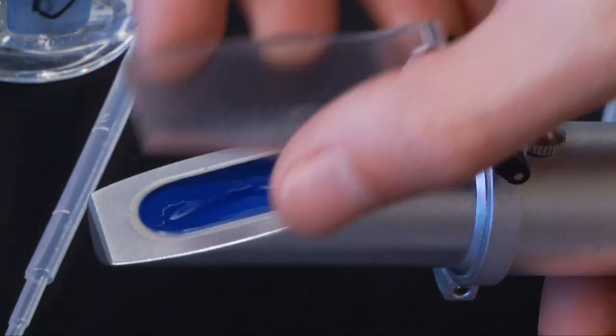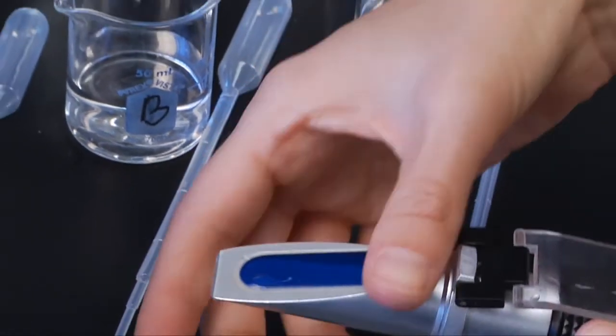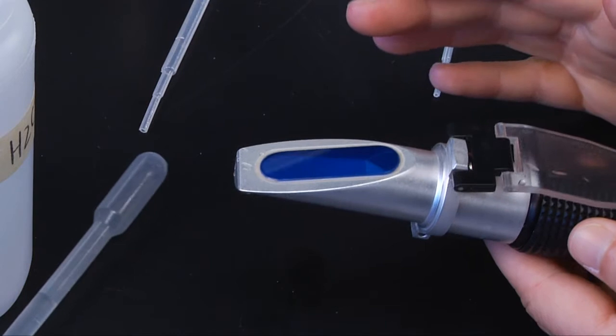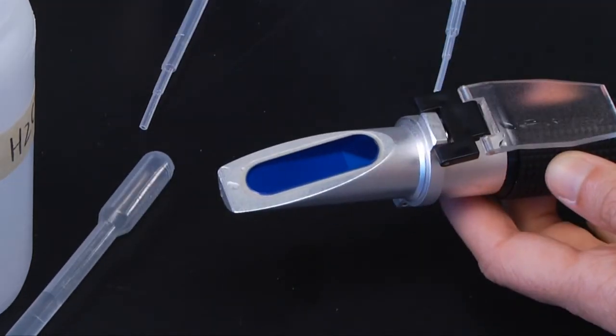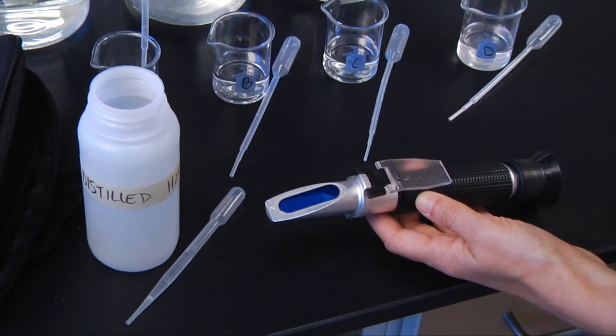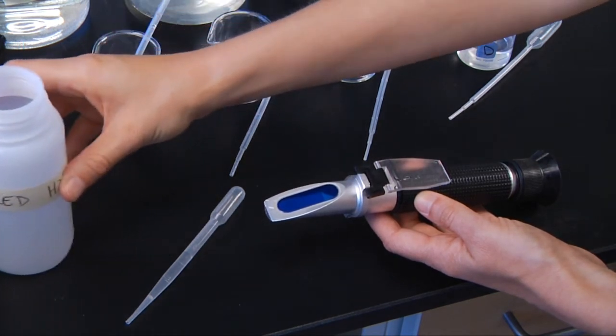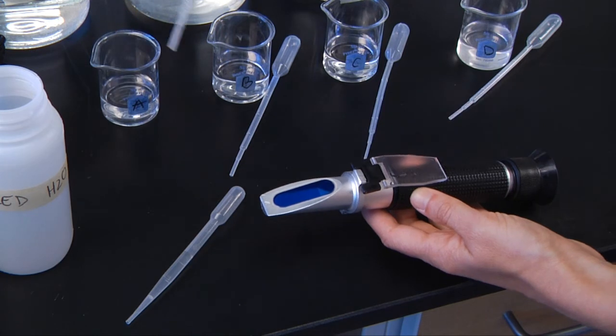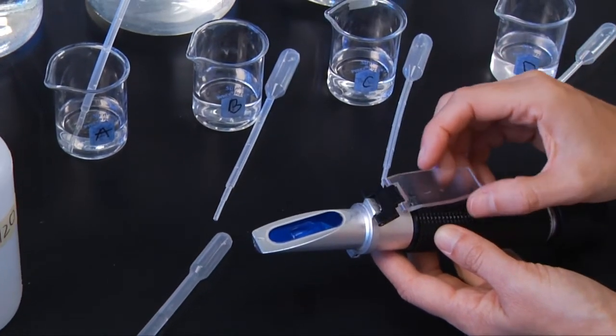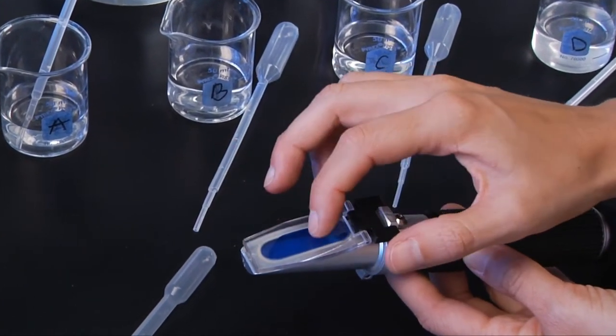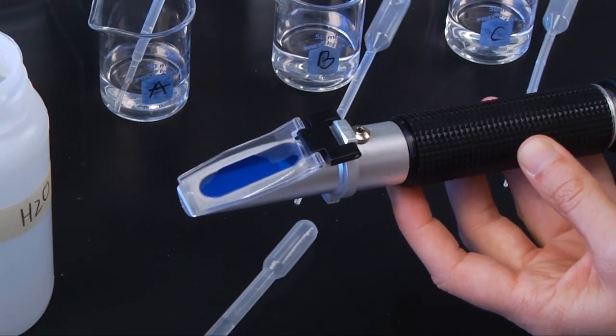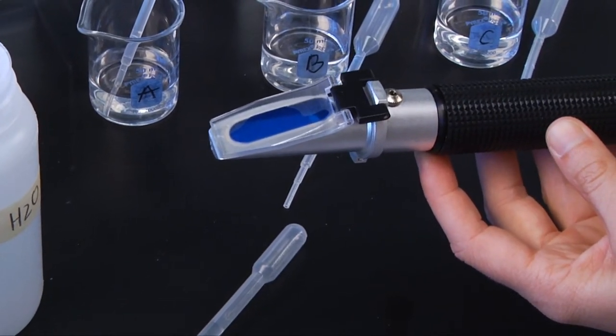So once you've done that, we're going to clean it off. Get that water off of there. And because we've just used distilled water, we don't have to worry about cleaning it too much. Just make sure it's nice and dry. And then you'll take each of your samples, so you can start with A. Take a little bit of that sample. Take some of that sample and then put a couple drops on that blue part again. Close the top. Make sure that there's no air bubbles, and then you're going to point this towards a light source. It could be a window. It could be a light. Then you're going to look through your eyepiece at the end to figure out what your salinity is.